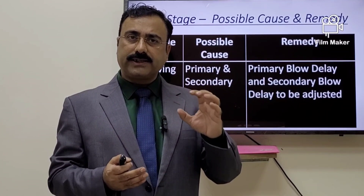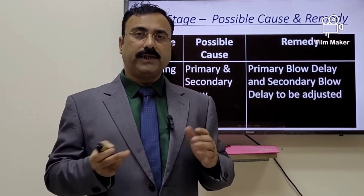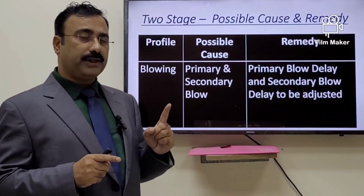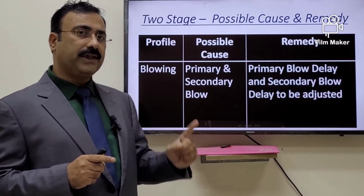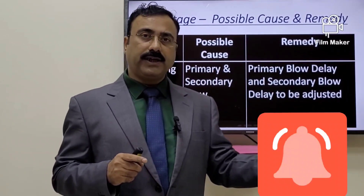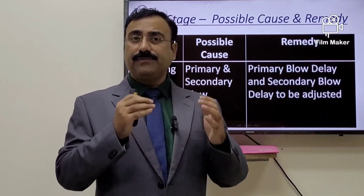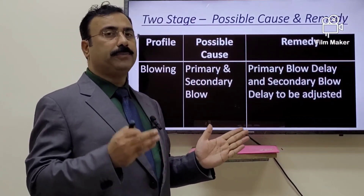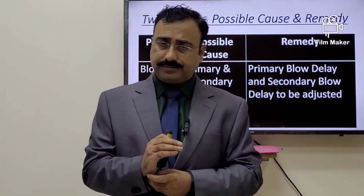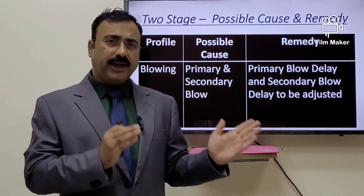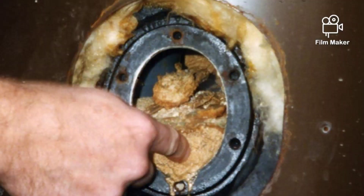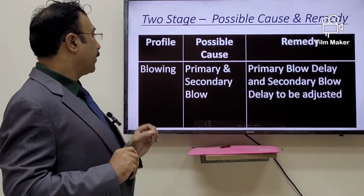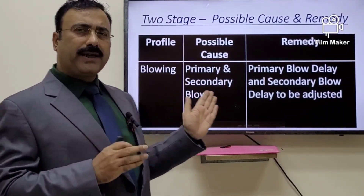If the preform is still not correct, clean the cooling channel starting from the injection core — remove the tube and clean it. If the problem persists, clean the cavity side as well. Water scale can build up, especially when the machine is stopped for one or two weeks. Depending on the geographical location, scale can be heavy or light, so clean the cooling channel to correct wall thickness in the preform.